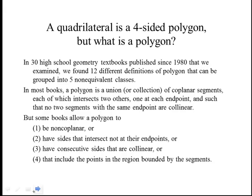A quadrilateral could be defined as a four-sided polygon, but what is a polygon? In 30 high school geometry textbooks published since 1980, they found 12 different definitions of polygon that can be grouped into five non-equivalent classes. In most books, a polygon is a union or collection of coplanar segments, each of which intersects two others one at each endpoint, such that no two segments with the same endpoint are collinear. But some books allow a polygon to be non-coplanar, or to have sides that intersect not at their endpoints, or have consecutive sides that are collinear, or include points in the region bounded by the segments.